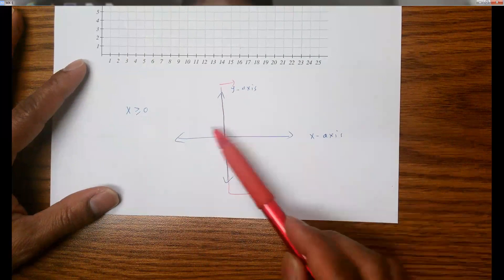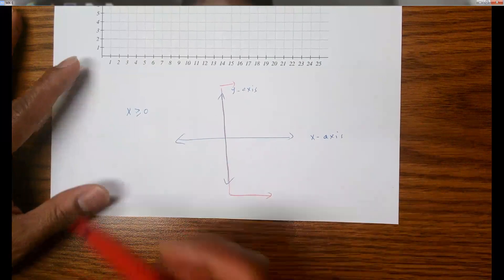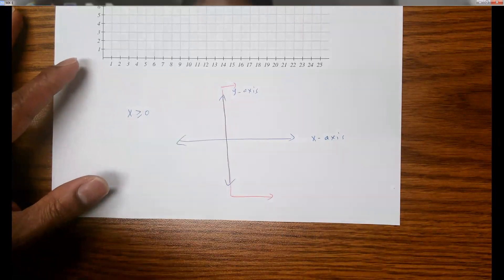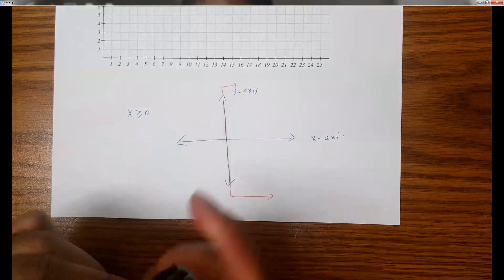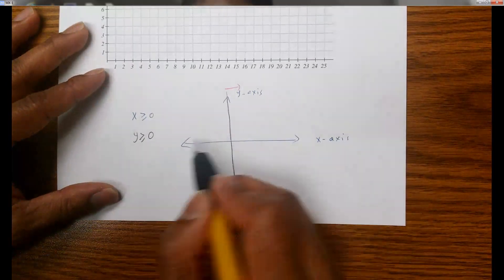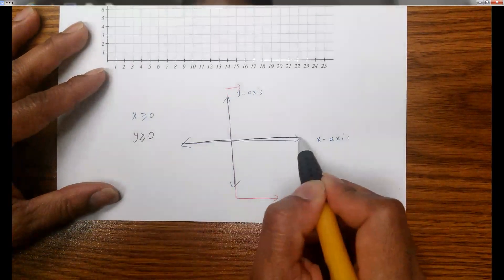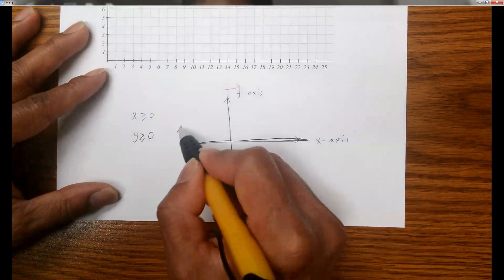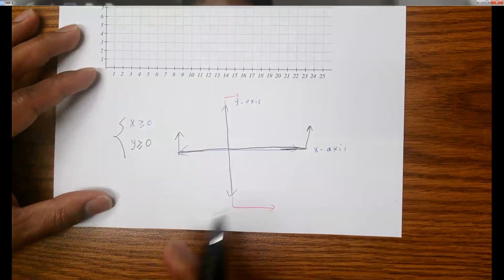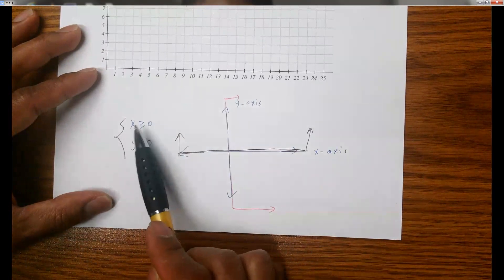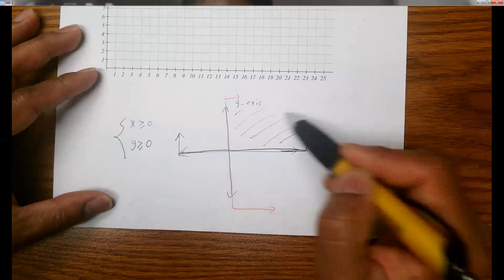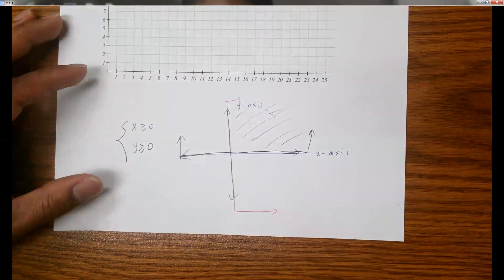On this line it's equal to 0, and then to the right it's greater than 0. Similarly, if you plot y is greater or equal to 0, that means y equals 0 is the x-axis, and greater means go up. Combining both together in one coordinate system means x is non-negative and y is non-negative, which is actually the first quadrant of the coordinate system.